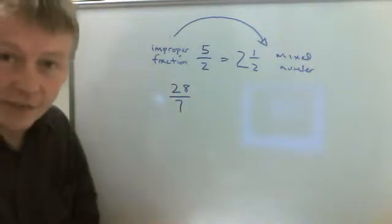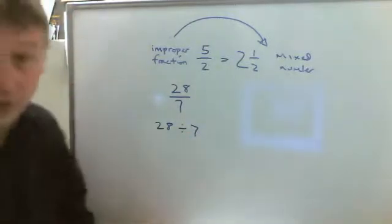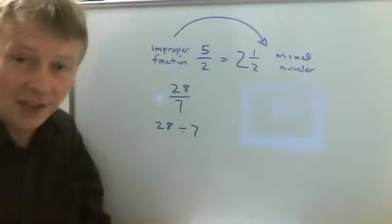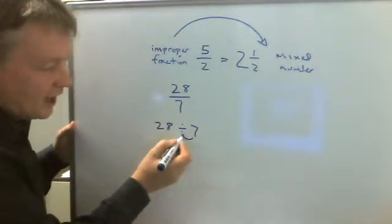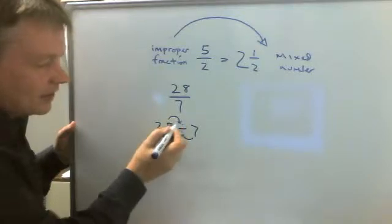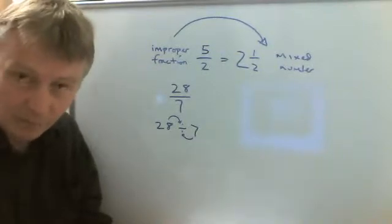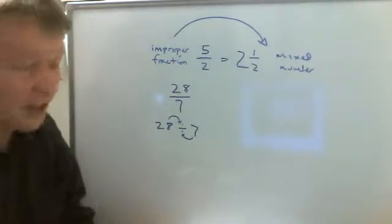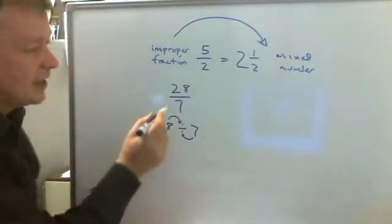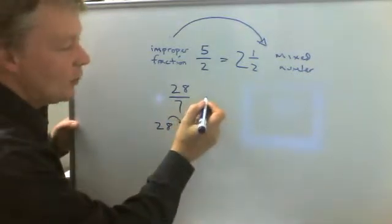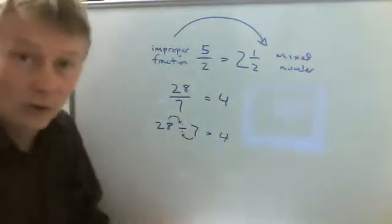28 over 7 is exactly the same as saying 28 divided by 7. In other words, how many lots of 7 are there in 28? These two little dots represent the 7 and the 28, so if we wanted to we could write it that way, 28 divided by 7. Now if you know your times tables, there are 4 lots of 7 to make 28, so 4 times 7 is 28. So the answer to this one is 4 whole ones.